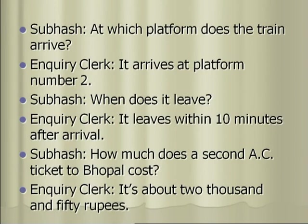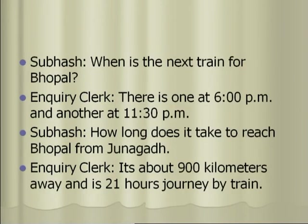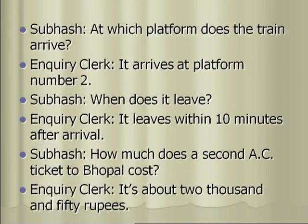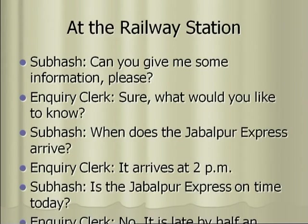Subhash: When does it leave? Inquiry Clerk: It leaves within 10 minutes after arrival. Subhash: How much does a second AC ticket to Bhopal cost? Inquiry Clerk: It's about Rs 2,050. Subhash: When is the next train for Bhopal? Inquiry Clerk: There is one at 6 pm and another at 11:30 pm. Subhash: How long does it take to reach Bhopal from Junagat? Inquiry Clerk: It's about 900 km away and is a 21-hour journey by train. Subhash: Is the pantry service available? Do they serve lunch? Inquiry Clerk: Yes, if you place an order in advance. Subhash: That's fine, thank you very much. Inquiry Clerk: Don't mention it, it's my pleasure.